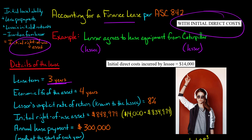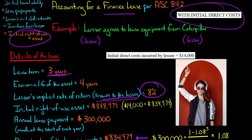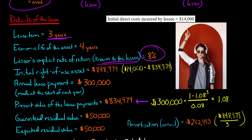I want to show you how those initial direct costs would change the initial calculation of the right of use asset and how it would change the amortization and journal entries throughout the lease. We've got a lease term of three years, the lessor's implicit rate of return known to the lessee of 8%, and an annual lease payment of $300,000 with payments made at the start of each year. We also have a guaranteed residual value and an expected residual value of $50,000. From all this information, we can use the formula for the present value of an annuity due to calculate the present value of those lease payments, which is $834,979.